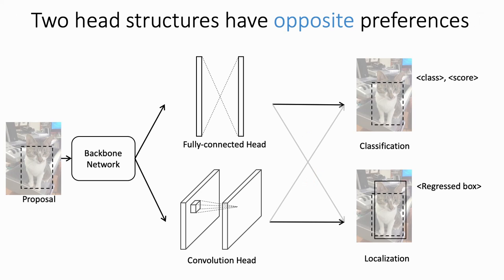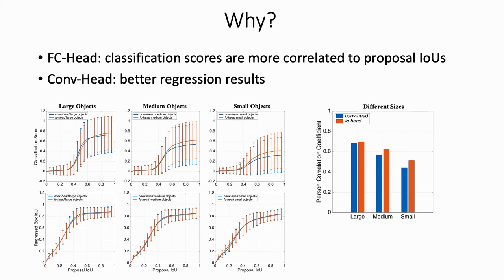We find that FC-Head is better for classification but CommHead is more suitable for localization. Why this happens? We find that classification scores of FC-Head are more correlated to proposal IoU. CommHead can generate better regression results.